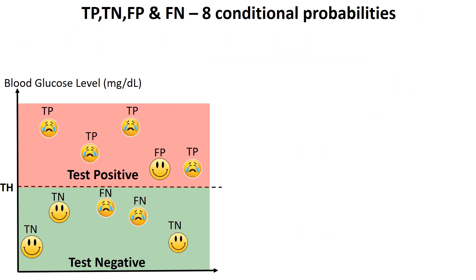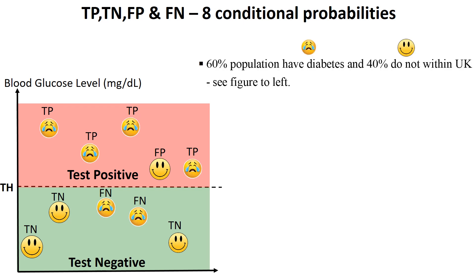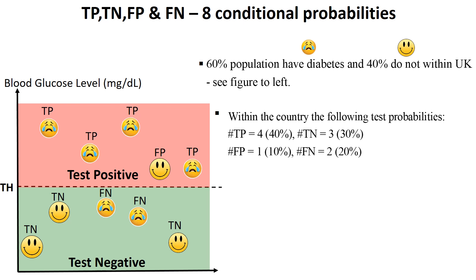We have eight conditional probabilities. 60% of the population have diabetes, 40% do not. The number of true positives is four, true negatives is three, false positives is one, and false negatives is two. So: 40% true positives, 30% true negatives, 10% false positives, and 20% false negatives.